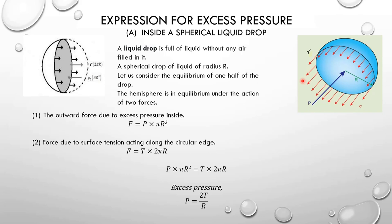First, we are going to find an expression for excess pressure inside a liquid drop. For that, let's consider a liquid drop of radius R. We will divide the liquid drop into two equal halves.